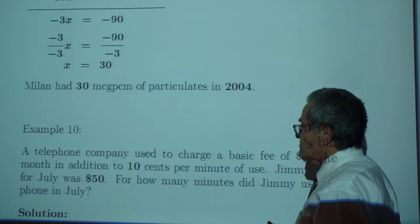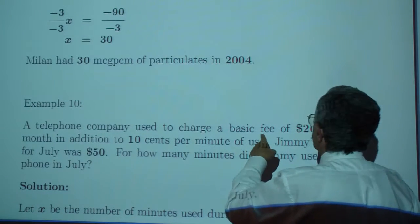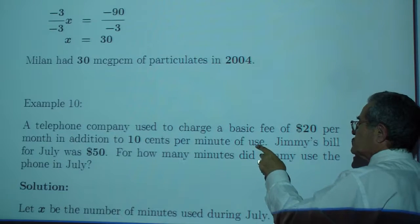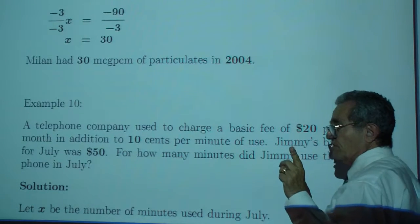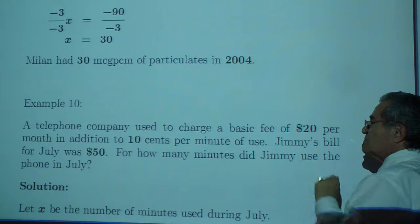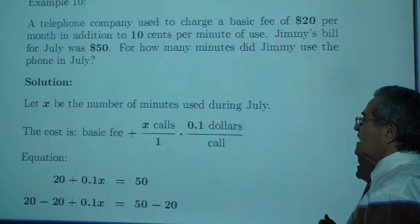One more example. A telephone company used to charge a basic fee of $20 per month, in addition to 10 cents per minute. Be careful. Cents and dollars. Jimmy's bill for July was $50. For how many minutes did Jimmy use the phone in July?